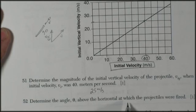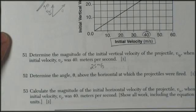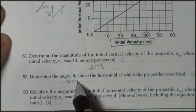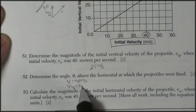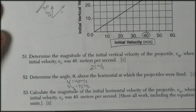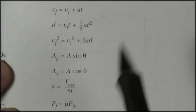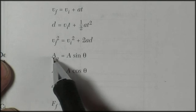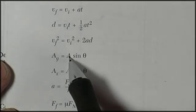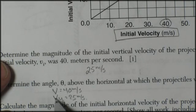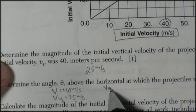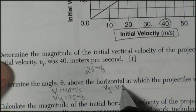Determine the angle above the horizontal at which the projectiles were fired. Well, problem 51 gives you some information. You know that velocity is equal to 40 meters per second, and velocity y is equal to 25 meters per second. We got that from the graph. So if we go to our formula sheet, we find that any vector's y component is equal to that vector times the sine of the angle. We know the vector's y component and the vector, so we can say vy = v sin θ.